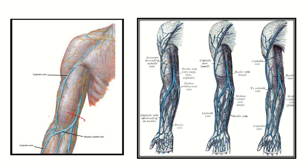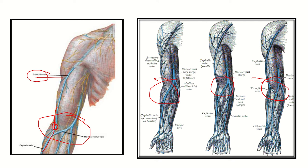Let's look at the antecubital fossa. In this picture we can see the antecubital fossa, and here the cephalic vein is going in the lateral aspect of the antecubital fossa. The cephalic vein lies in the lateral part of the antecubital fossa, as we can see in all three images. The brachial artery lies in the deeper space.